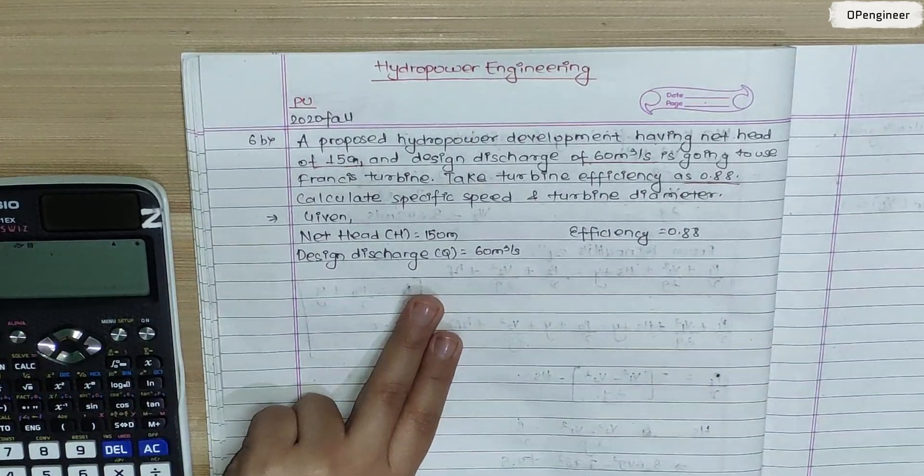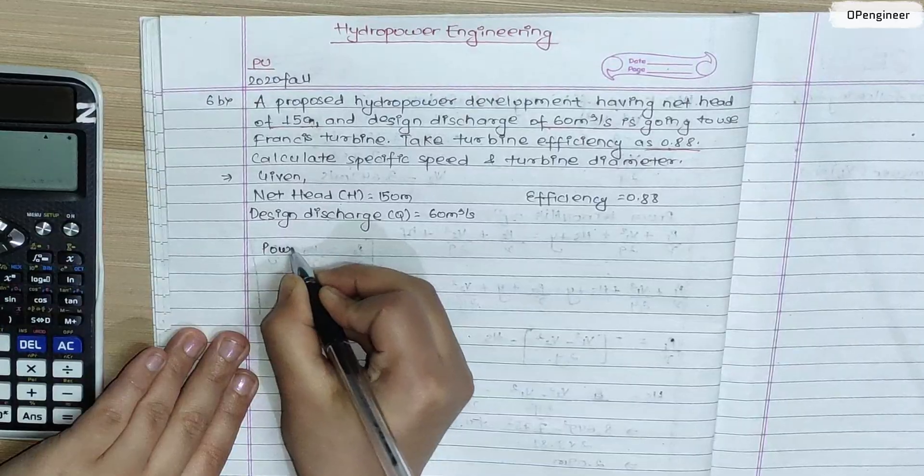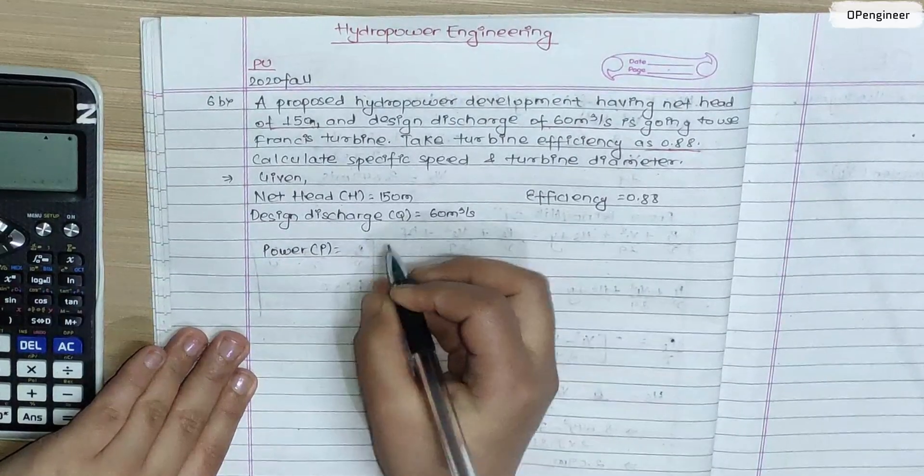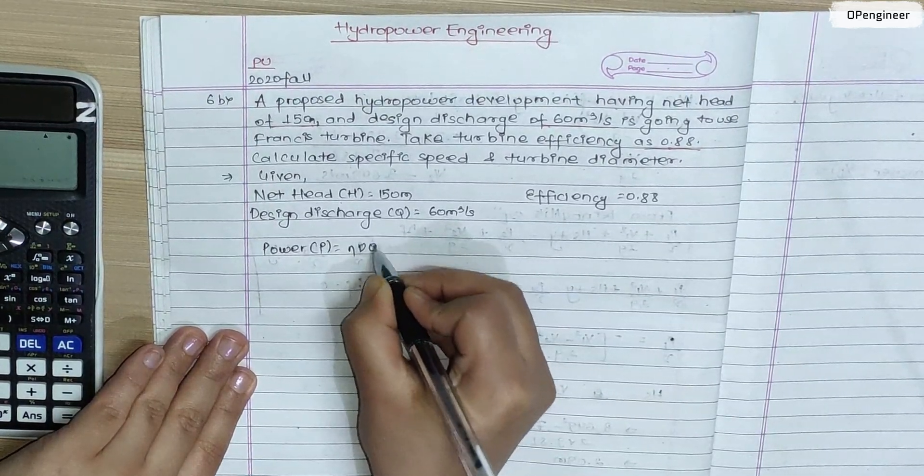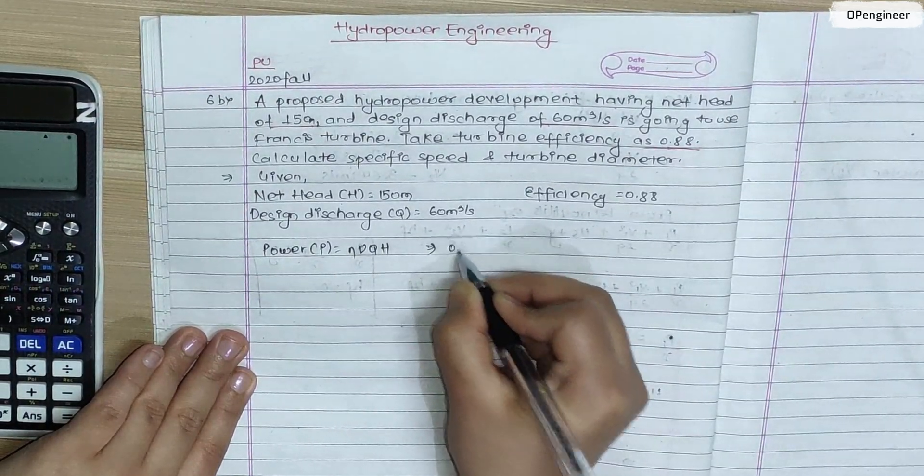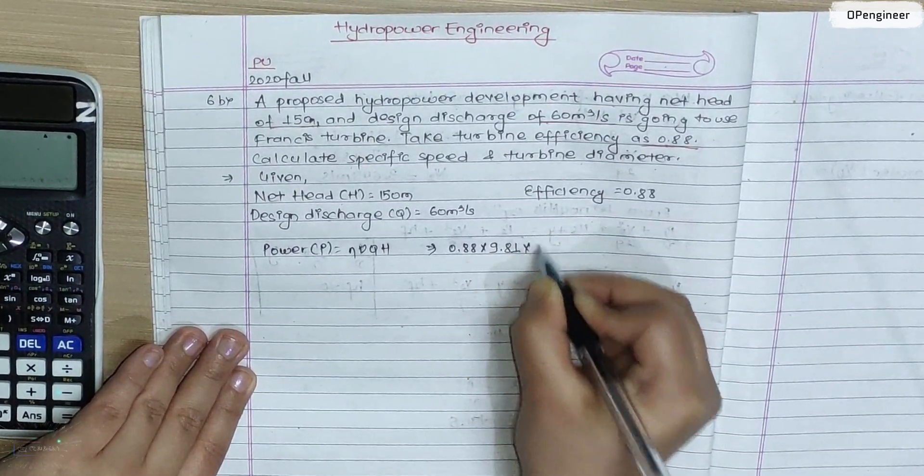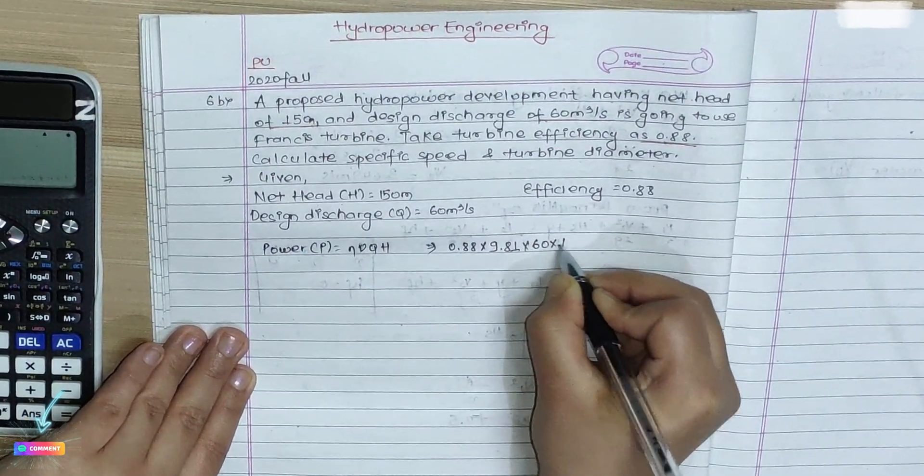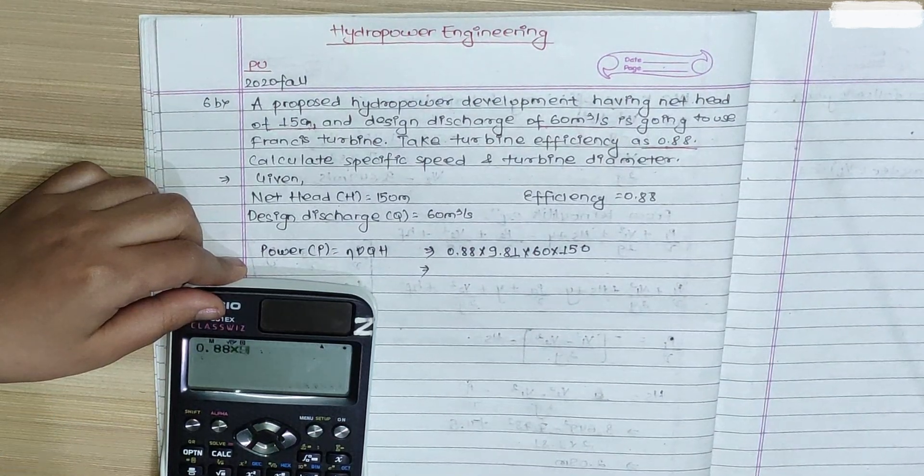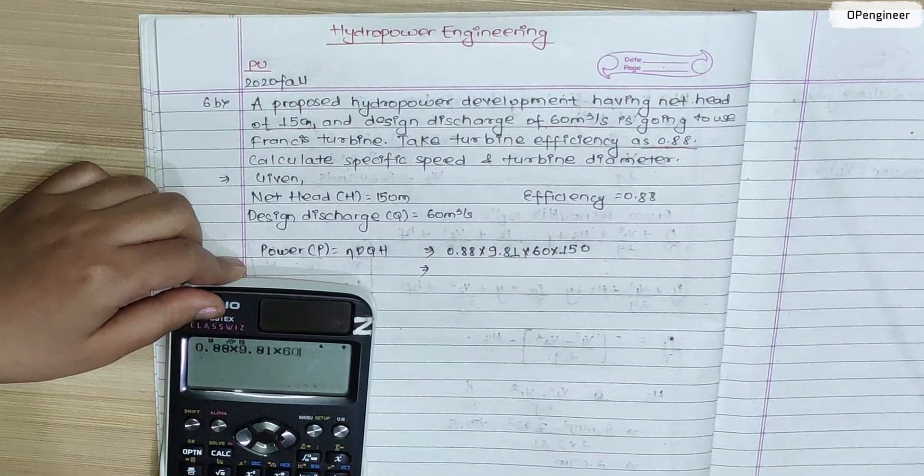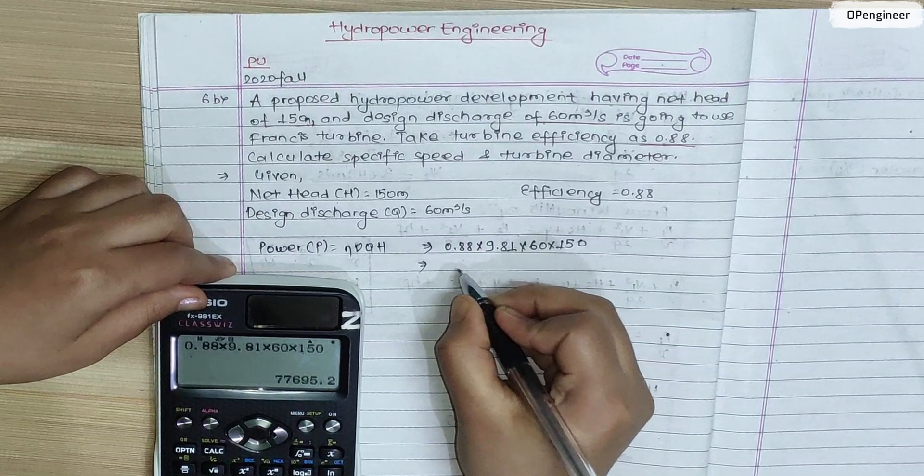We need to calculate the power. Turbine efficiency is 0.88, gamma is 9.81, discharge is 60, head is 150. So 0.88 into 9.81 into 60 into 150.